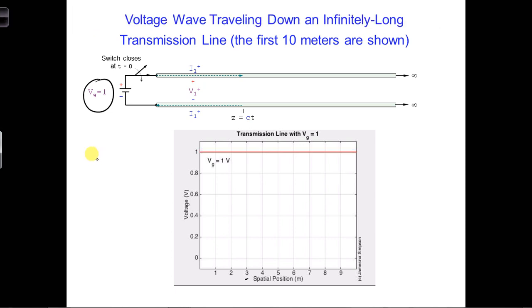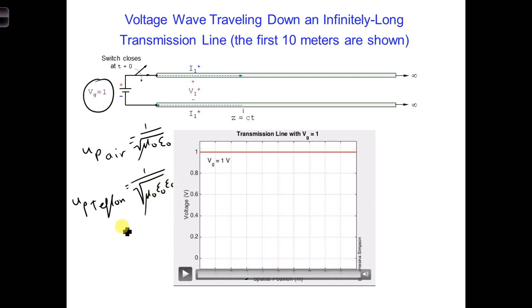For air, we had U_P_air is equal to 1 over mu naught square root, mu naught, epsilon naught. And then for Teflon, we have to scale by the relative permittivity. So we'd have mu naught, epsilon naught, epsilon r, and epsilon r is equal to 2.1.